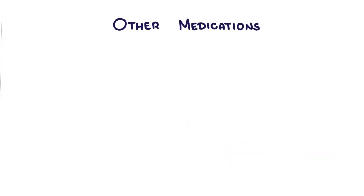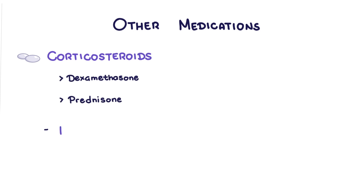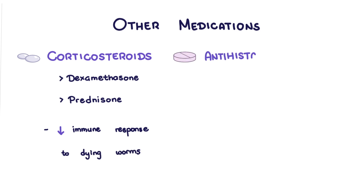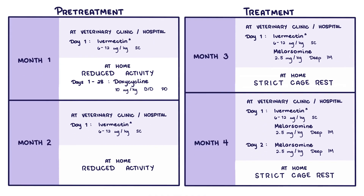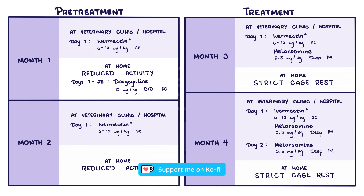Other medications are used to minimize inflammation, pain, and other adverse effects. Corticosteroids like dexamethasone or prednisone can help dampen the immune system's response to the dying worms. Antihistamines minimize allergic reactions. NSAIDs may be given to reduce inflammation and alleviate pain from melarsamine injection. The full course of heartworm treatment can be summarized in an image available on the speaker's Ko-fi page.